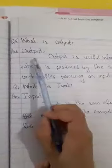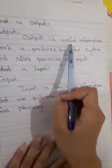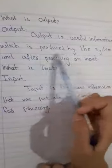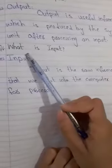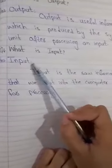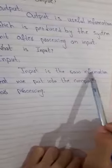Question number 5: What is output? Output is useful information which is produced by the system unit after processing on input. Question number 6: What is input? Input is the raw information that we put into the computer for processing.